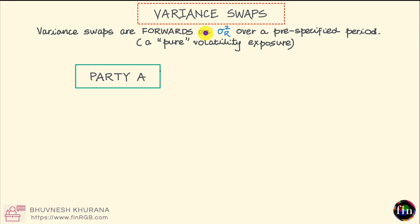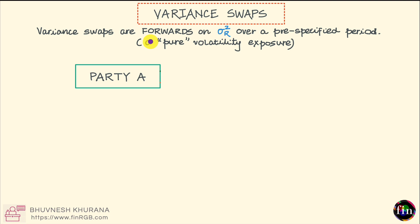In this video let's talk about variance swaps. Let's begin with a quick definition. Variance swaps are essentially forwards on the realized variance of your chosen asset, measured over a pre-specified period. Realized variance is the square of the realized volatility, and in this definition we are referring to variance swaps as being essentially forwards.